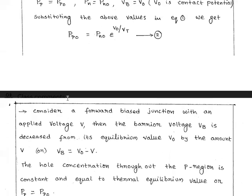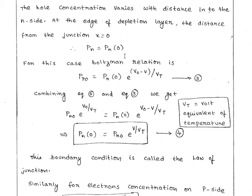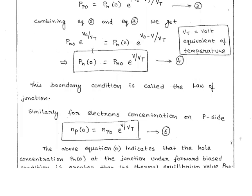Rearranging the equation, pn(0) equals pn0 into e power (V / Vt), where Vt is the voltage equivalent of temperature. This is the condition known as the law of junction: holes in the n-side at zero distance equals the equilibrium hole concentration in the n-side multiplied by e power (V / Vt).